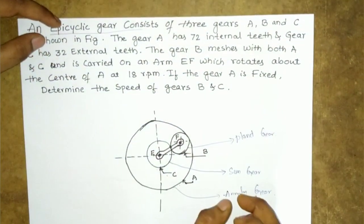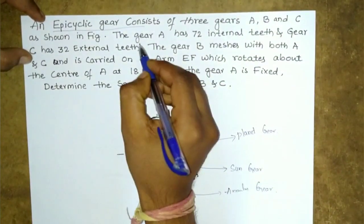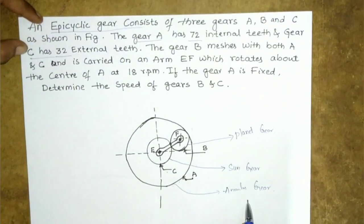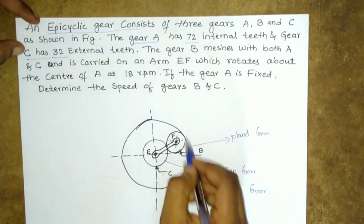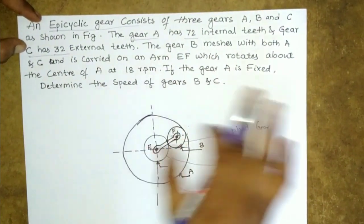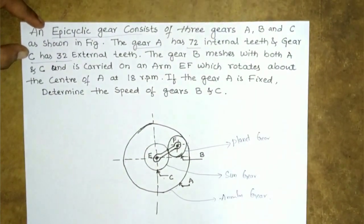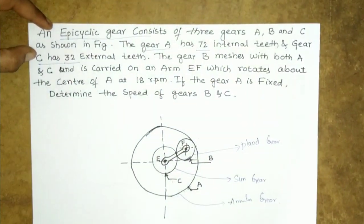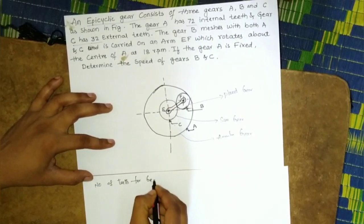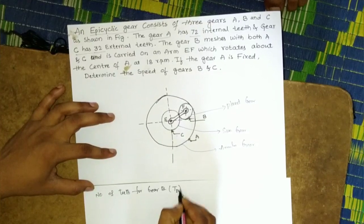First, check whether the number of teeth is given for all the gears. Gear A has 72 internal teeth and gear C has 32 external teeth. However, the number of teeth for gear B is not given, so we need to determine that.